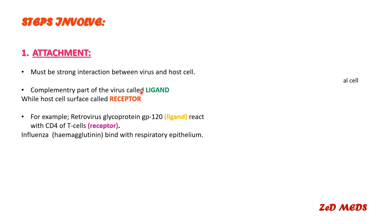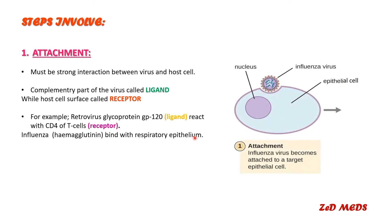For example, a retrovirus has glycoprotein GP120 that acts as a ligand and reacts with CD4 on the T cell, which acts as the receptor. Similarly, influenza hemagglutinin binds with the respiratory epithelium. In the diagram shown, the hemagglutinin part of the influenza virus acts as the ligand and the epithelial surface acts as the receptor site for attachment.